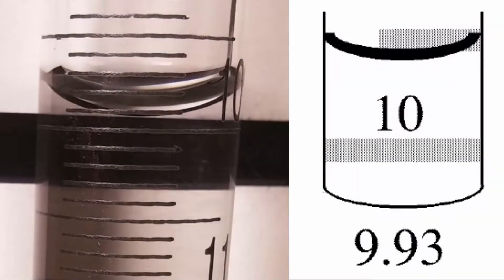In the third example, the meniscus sits approximately half a line width below the 9.90 marking therefore the reading is 9.93.